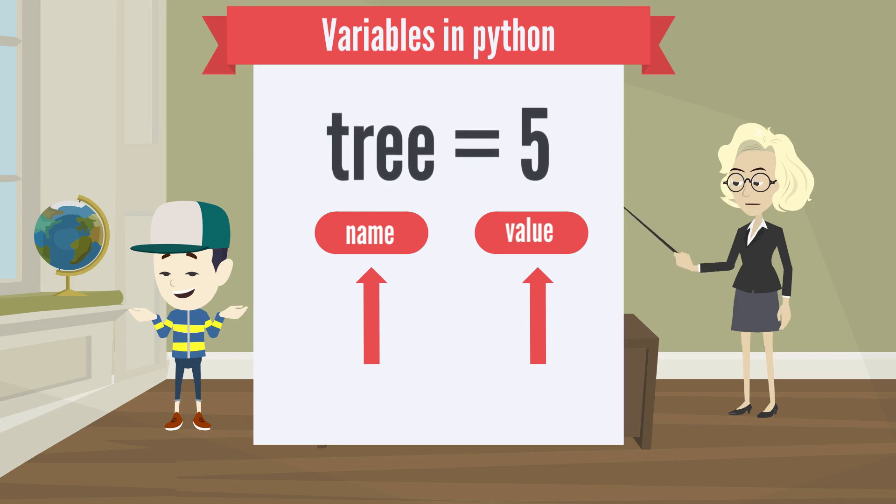Let's take an example. Tree equal to 5. So here tree is the variable name and 5 is the variable value. Tree is the variable for the number 5.